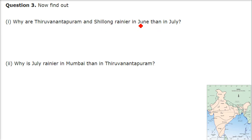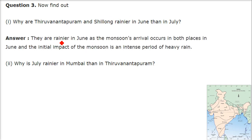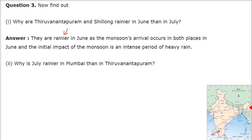Find out why Thiruvananthapuram and Shillong are rainier in June than in July. The reason is that the monsoon's arrival occurs in both places in June, and the initial impact of the monsoon is an intense period of heavy rain — monsoon burst. So Thiruvananthapuram and the Shillong area are mostly affected in June.